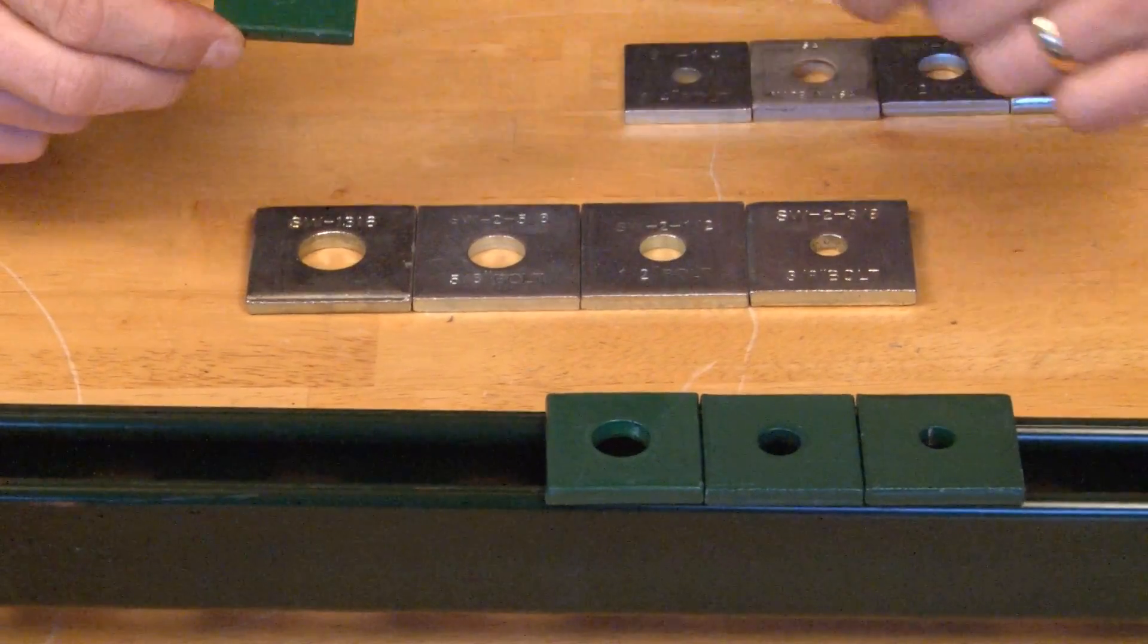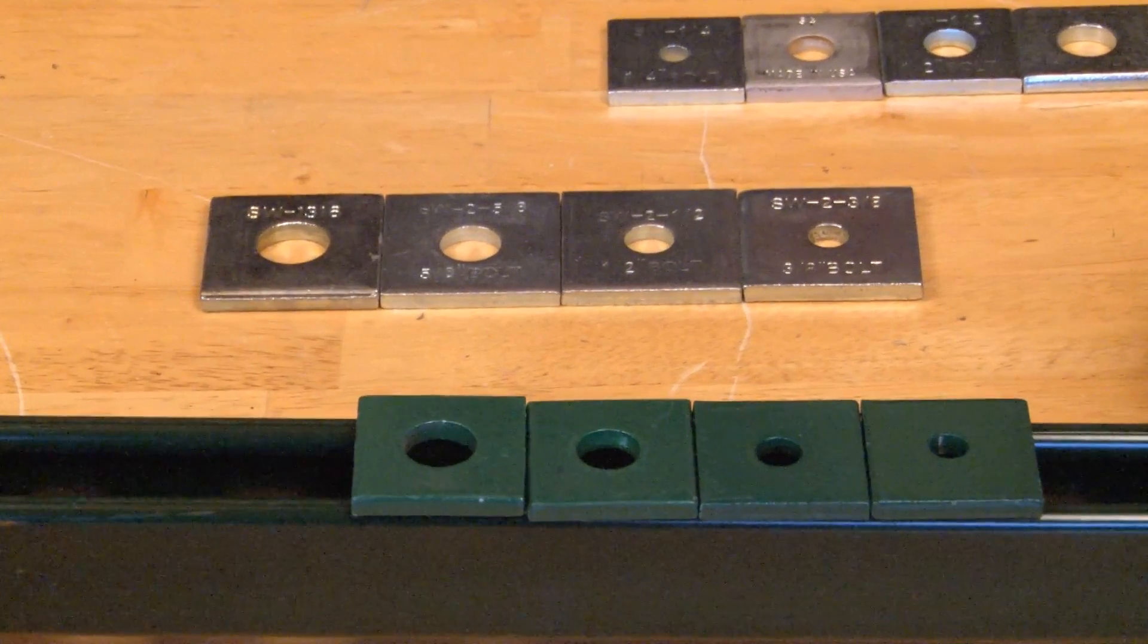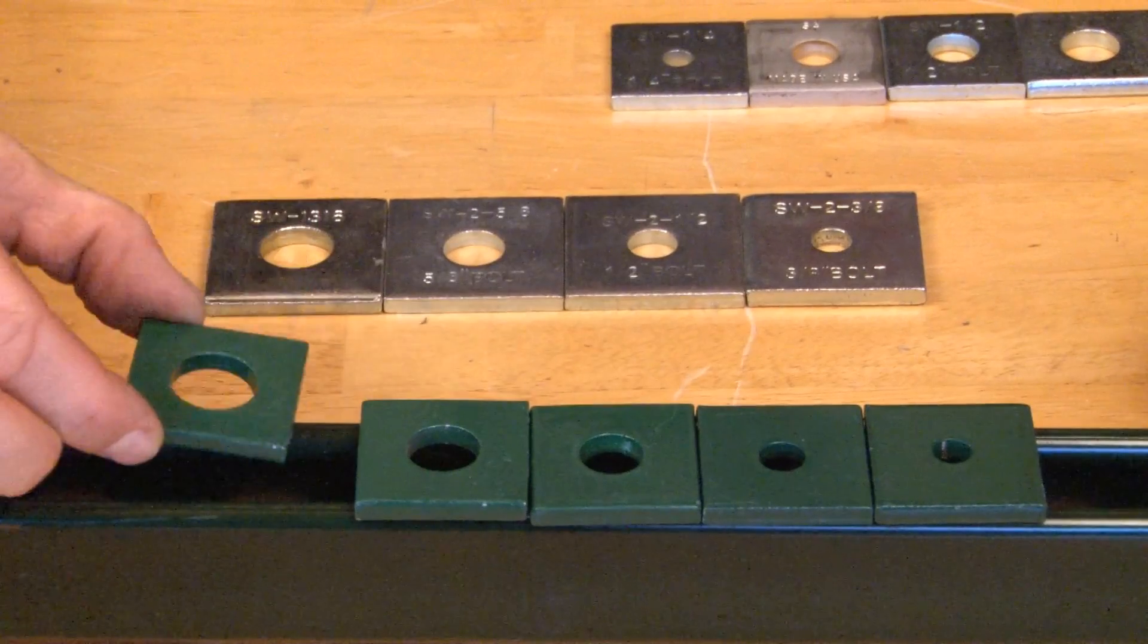Next size up SW five-eighths G for five-eighths fasteners. And then the largest in the line SW three-quarter is a slip fit for three-quarter inch.